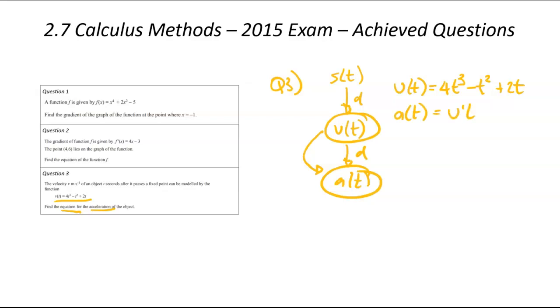The acceleration is what we're trying to find out. That's going to be equal to the derivative of the velocity. That's going to be 4 times that 3, which is 12. So 12, take 1 off the power, t², minus 2t plus 2.